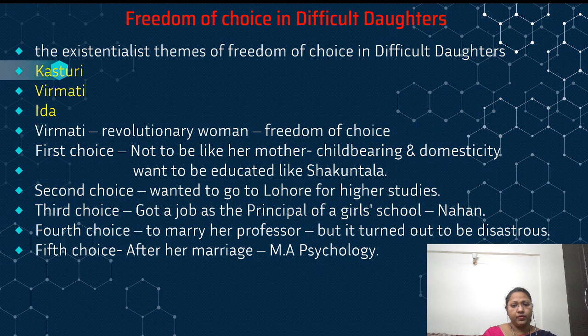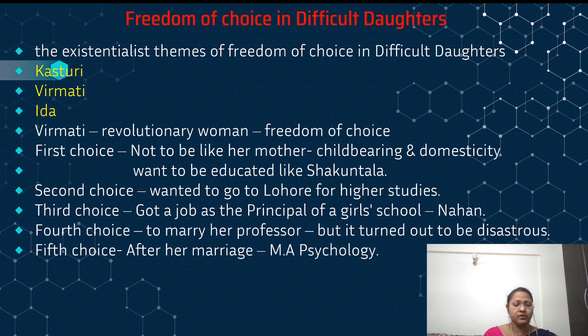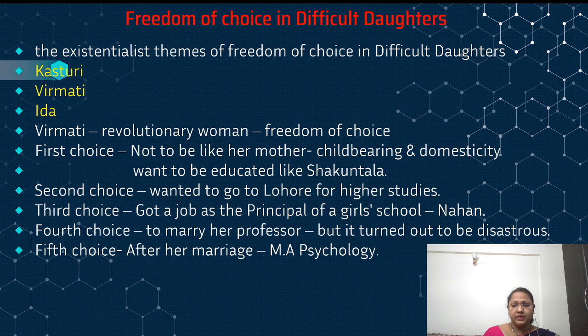In Difficult Daughters, the important characters are Kasturi, Virmati, and Ida — three generations of women. Virmati is the protagonist of this novel and is portrayed as a revolutionary woman who exercises freedom of choice. The first and foremost choice she makes is that she does not want to live like her mother, whose life revolved around childbearing and domesticity. Instead, she wants to be an educated woman like her cousin Shakuntala.